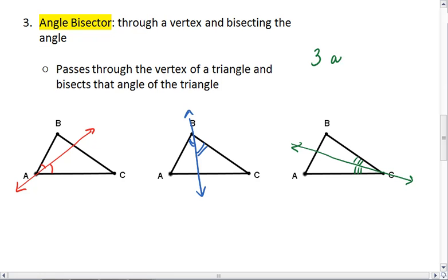We see again that we have three angle bisectors in a triangle.